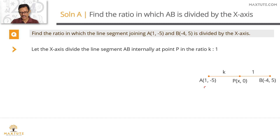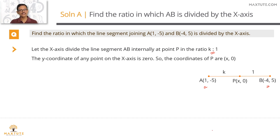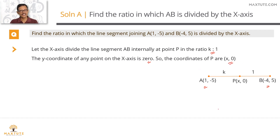Let the x-axis divide this line segment AB at point P in the ratio k is to 1. There are two concepts you need to know to solve this question. The first one: the y-coordinate of any point on the x-axis is zero. So a typical point on the x-axis is going to have a coordinate which looks like (x, 0).